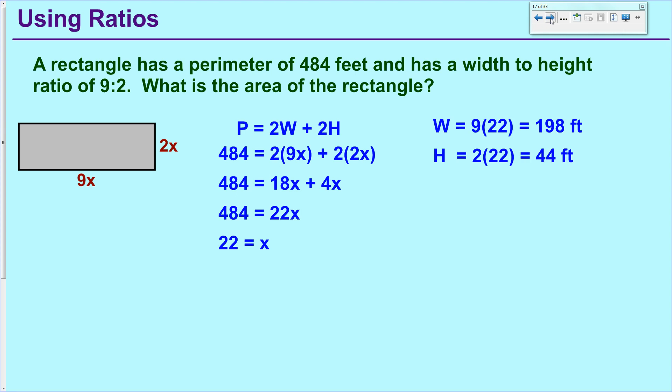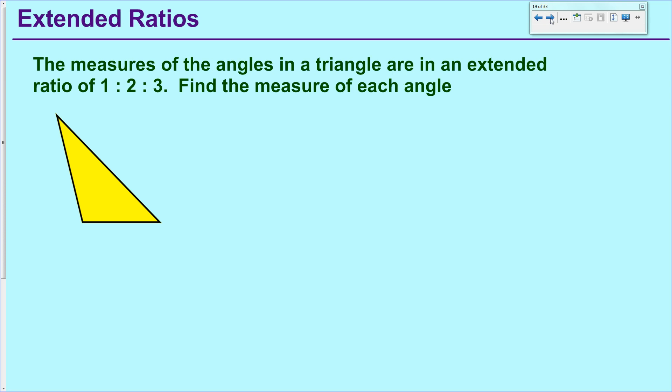And then to get your area, you just take width times height. And you'll get 8,712 feet squared. Second example, this time with a triangle and talking about the angles inside of a triangle. This is called an extended ratio where there's more than two things being compared. You can extend a ratio to be as many things as you want. But this time we have three angles, so we'll talk about a ratio using three items.